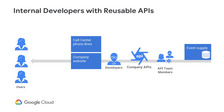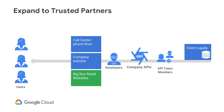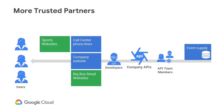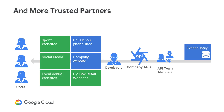In solving these problems, the company found that the security policies could be reused by both internal and partner developers. They were able to create API products reusing the same security policies for partners such as Costco, who included the ability to search for events and purchase tickets on their website. The company found they could create API products for each trusted partner while reusing the same security policies, and demand for their API products amongst partners grew.